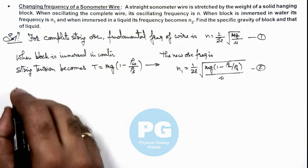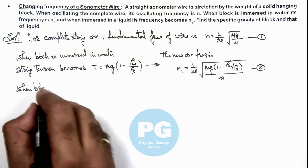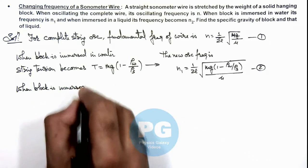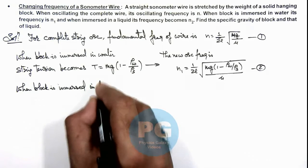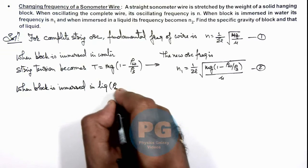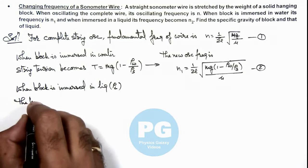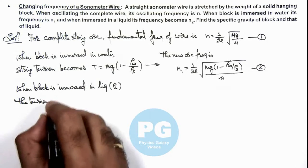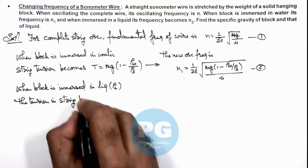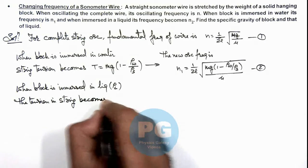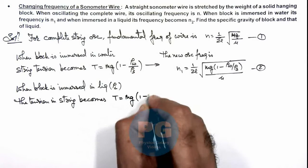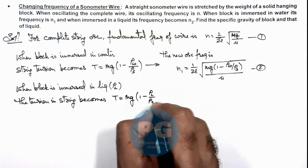Now when the block is immersed in a liquid with density ρ_l, the tension in the string becomes similar to before: the effective weight changes to mg(1 - ρ_liquid/ρ_solid).